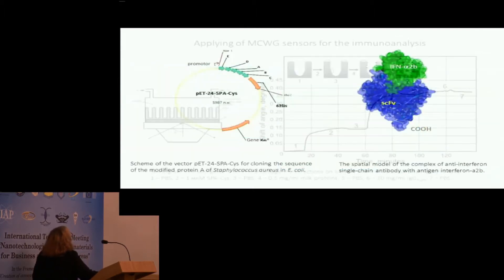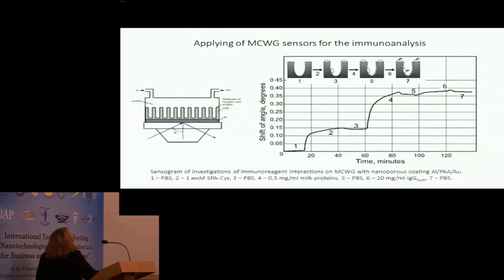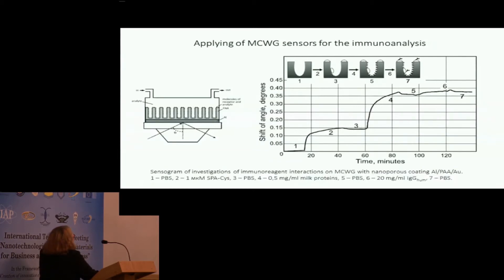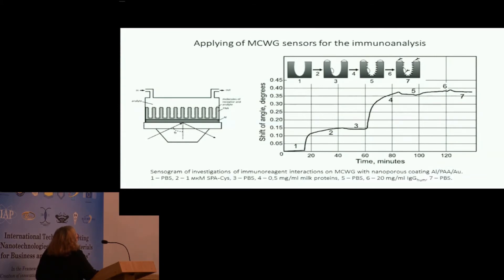This slide represents the application of metal clad waveguide sensors for immunoanalysis with recombinant immunoreagents. This work was carried out with the Institute of Genetics in the Department of Jelskaya. This sensorogram represents the investigation of immunoreagent reactions on MCWG with nanoporous coating consisting of porous anodic alumina and thin films of gold.